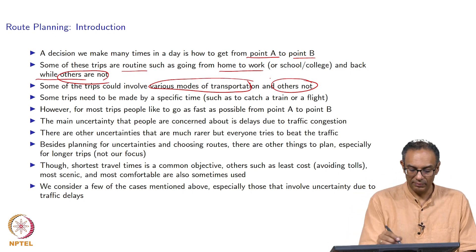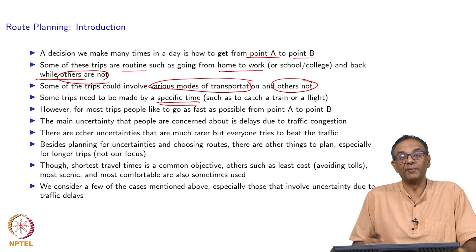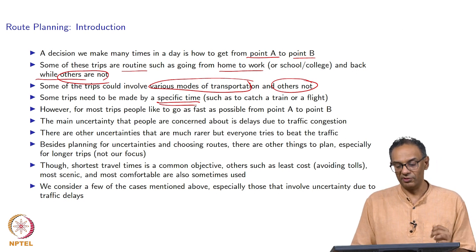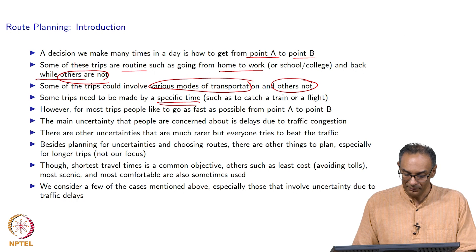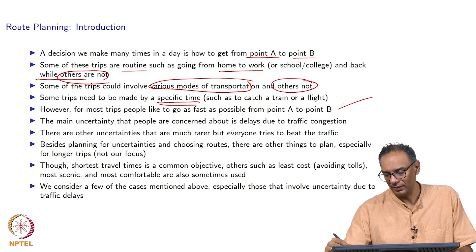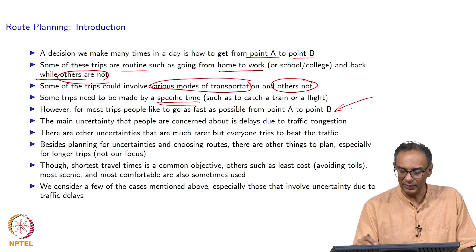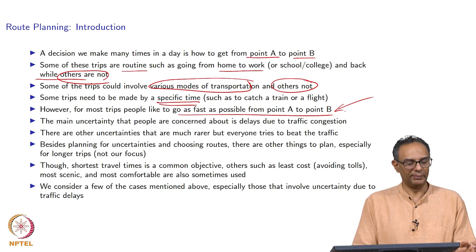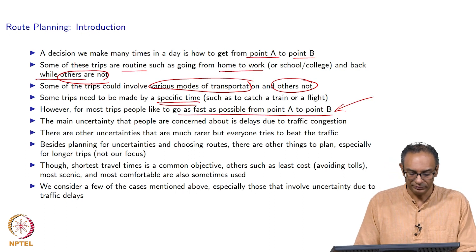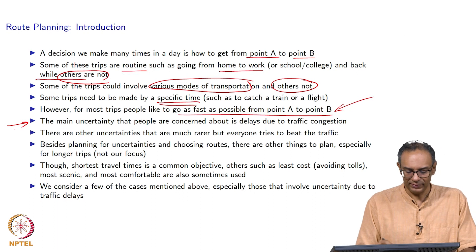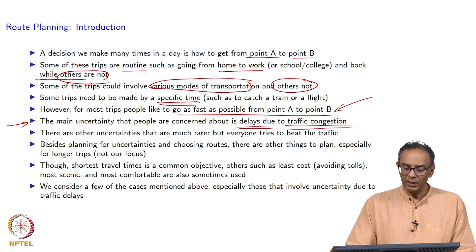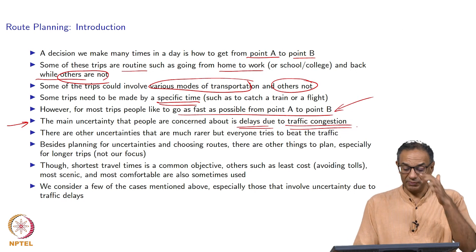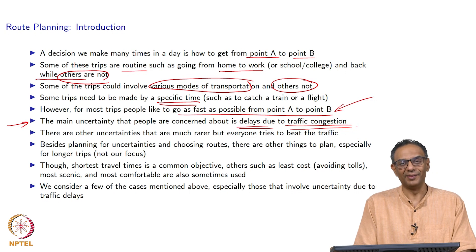Sometimes you need to make a trip before a specified time, like if you have to catch a plane or a train — there is a time by which you have to reach. For the most part, most people like to go as fast as possible from point A to point B. That is a very common objective. The main uncertainty we face is delays due to traffic congestion. We will focus on beating the traffic for the most part.